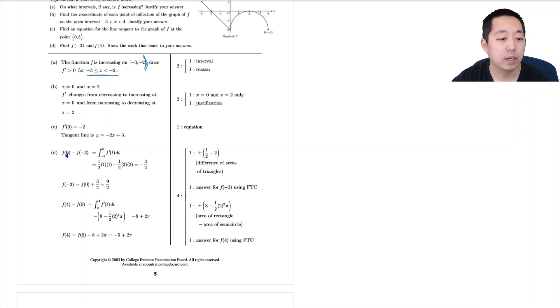We got, what did we get for our answers? Minus 1.5, 4.5. Nine halves is 4.5. And then this one we got negative 5 plus 2 pi. Okay, cool. So hope you found that helpful.